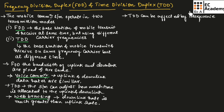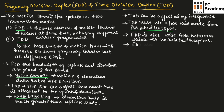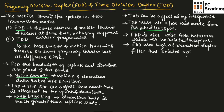To avoid interference, TDD must use networks that are made from isolated hotspots. In contrast, FDD often uses wide area networks which have no isolated regions. FDD uses a high attenuation duplex filter that isolates the uplink transmitter from the downlink receiver.